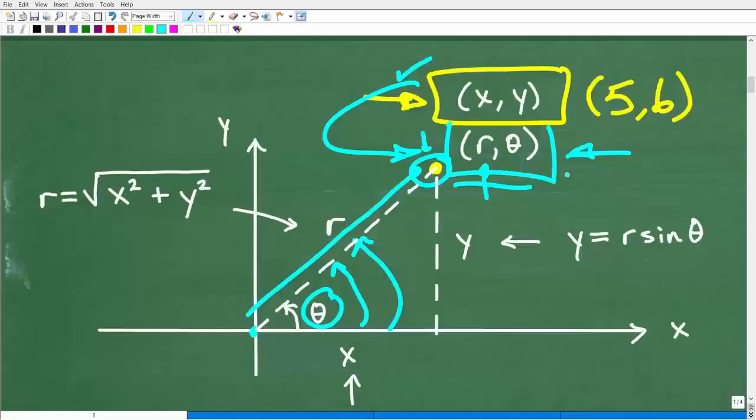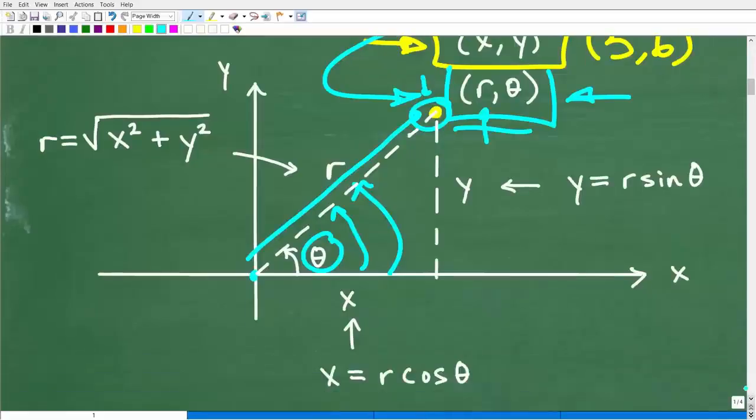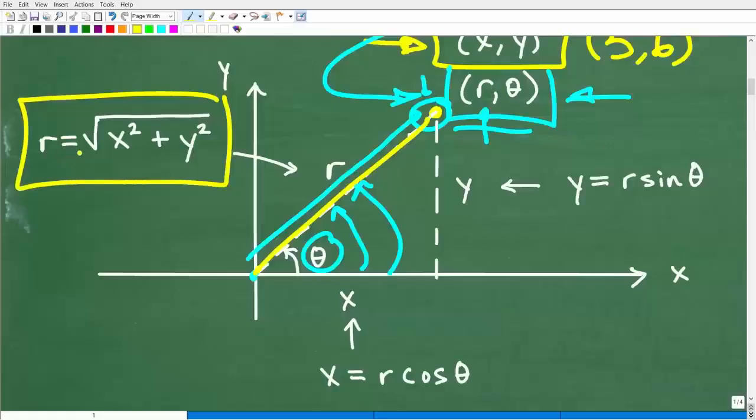Now, those of you out there that are studying trigonometry should understand this. Let me go ahead and tell you some of the things that we need to know that you definitely need to keep in mind. Okay. So right here, the radius is equal to this distance from the origin to this point is equal to the square root of x squared plus y squared.